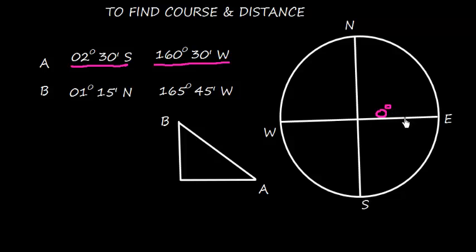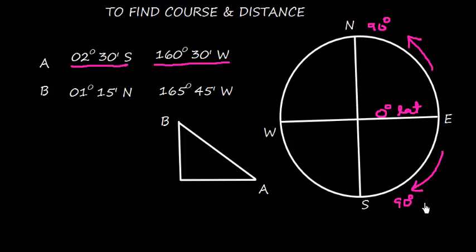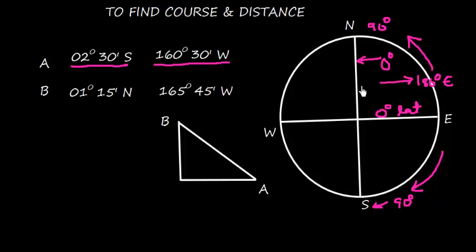Suppose this is the equator, which is 0 degree latitude. Latitudes are measured 0 to 90 degrees north in this direction and 0 to 90 degrees south in this direction. Similarly, assume this is the prime meridian or 0 degree longitude, and longitudes are measured 0 to 180 degrees east or 0 to 180 degrees west.